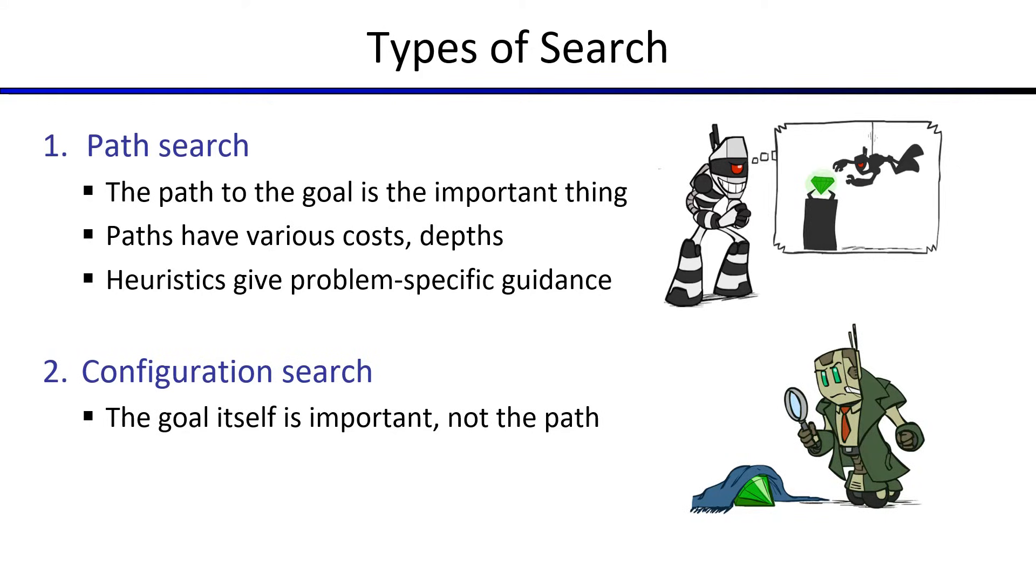In the path search, we are given an initial state, a goal state, and our target is to find a path from the initial to the goal state. Suppose A is our initial state and G is our goal state, and there are some other states B and C.